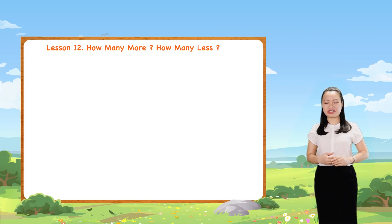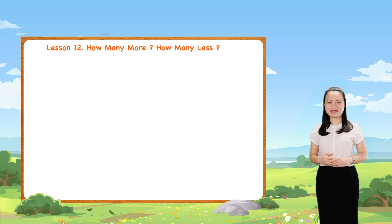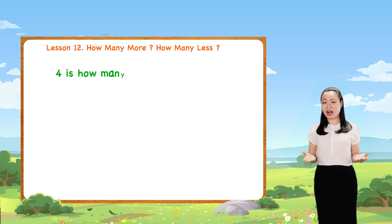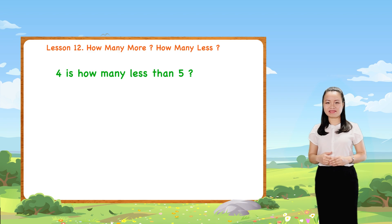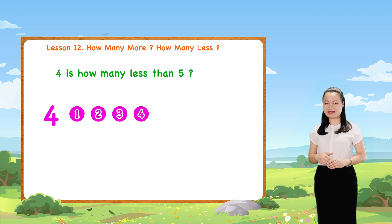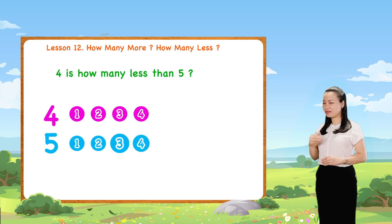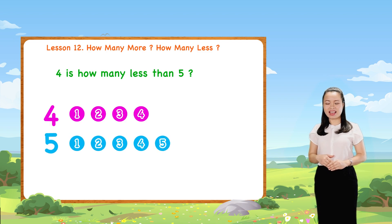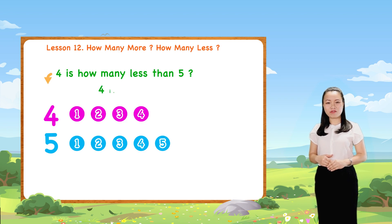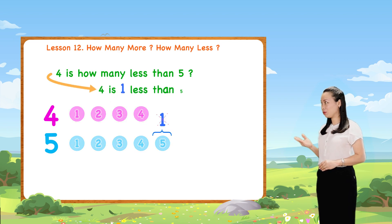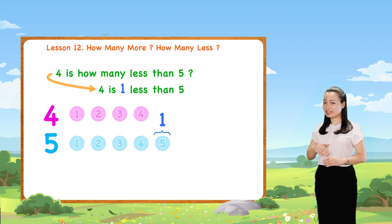Next question, four is how many less than five? Here, we have four dots and five dots. Then, you can see, four is one less than five.